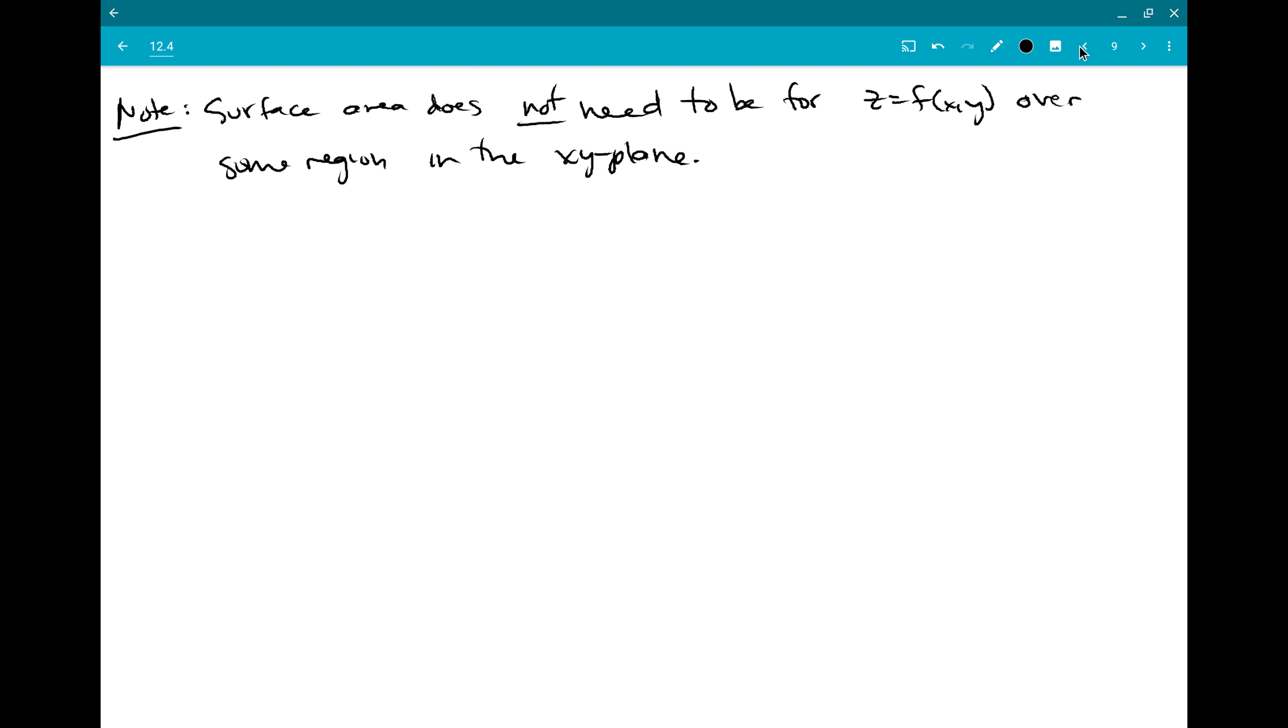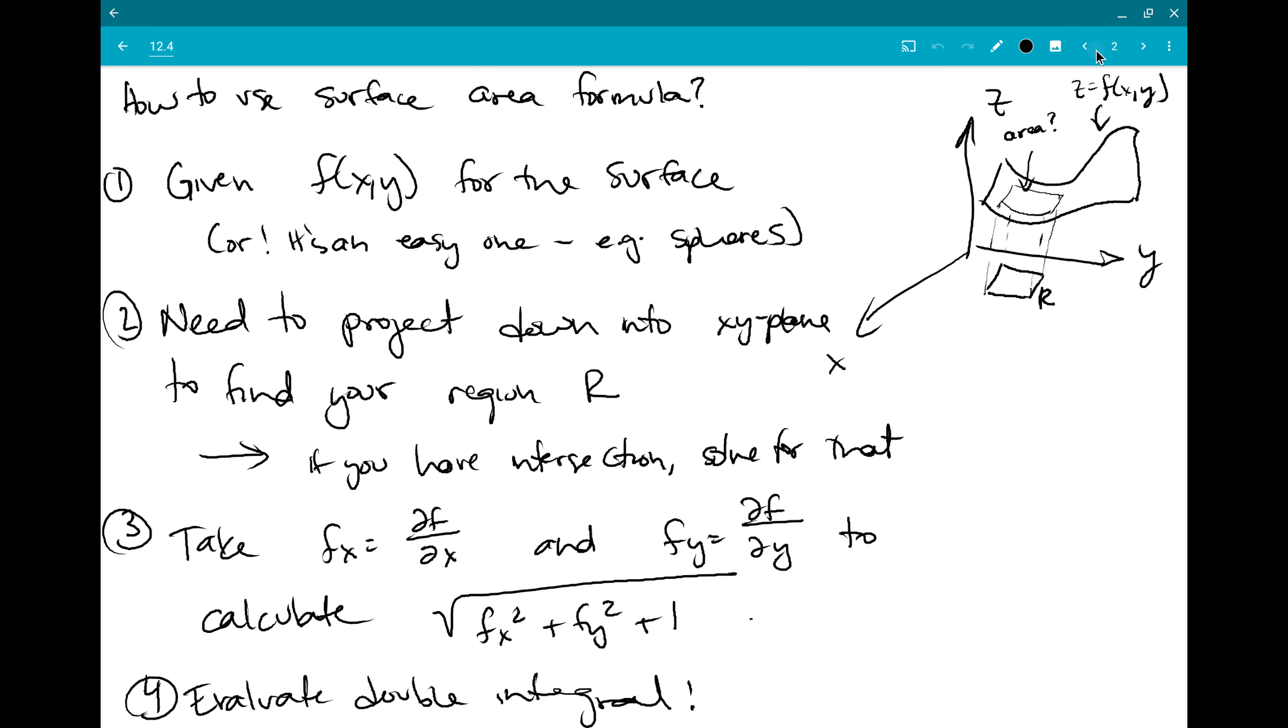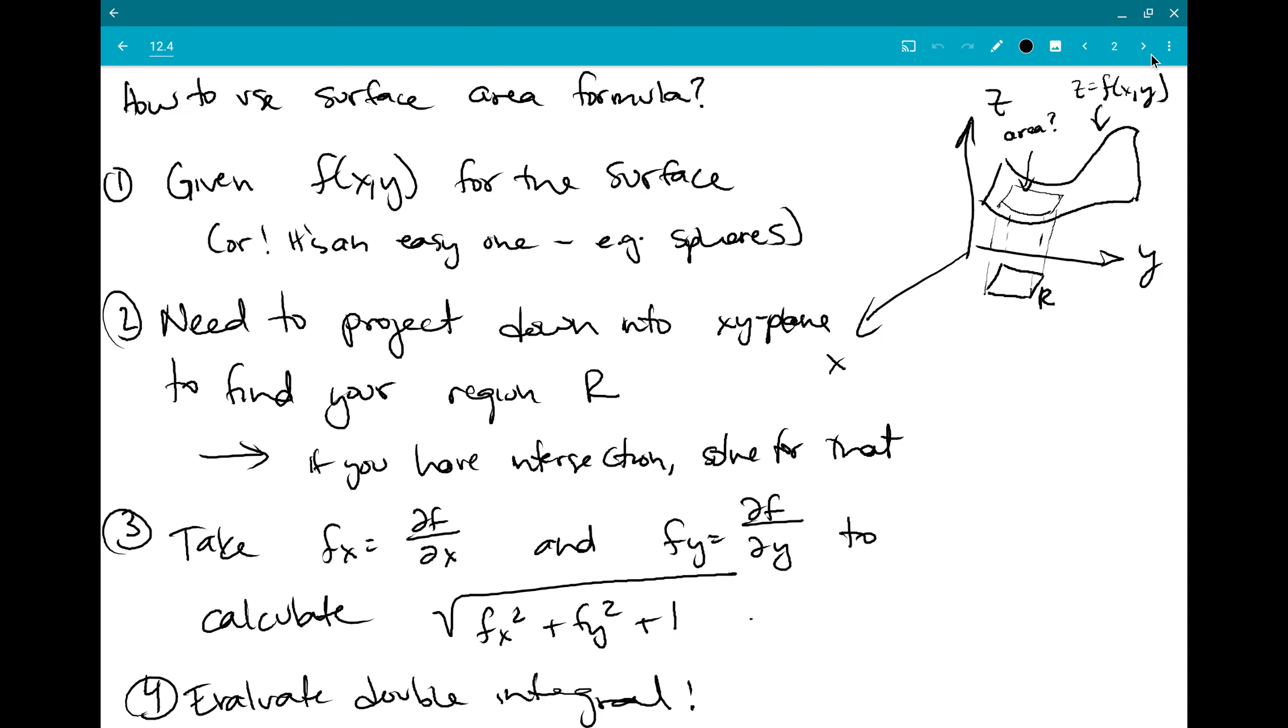So when we wrote this first formula way back at the start of these notes and we wrote fx squared plus fy squared, we're assuming some surface z equal to f of xy for our plot of z. But z isn't special compared to x and y that makes this possible.